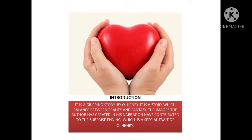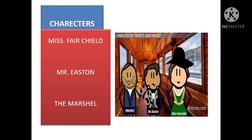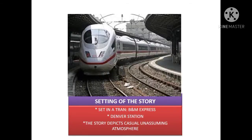The characters present in this story are Miss Fairchild, Mr. Eastern, the Marshal, and the glum-faced man. The setting of this story is set in a train, the B&M Express, Denver Station. The story depicts a casual and amusing atmosphere. It is developed in quite a natural way.